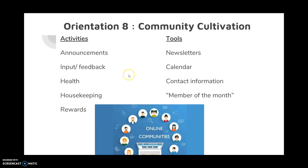Orientation eight is the focus of community cultivation. You'll want to address how you're going to create announcements, how you're going to receive input and provide feedback, and how you're going to maintain good housekeeping in your community. Some of the suggested tools are newsletters, calendars, and even the idea of having a member of the month.